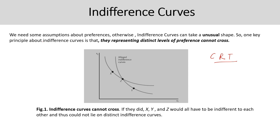To prove this, observe in the figure that there are three bundles a consumer can choose from: X, Y, and Z. X lies only on indifference curve I1, Y lies on indifference curve I2, and Z lies at the point of intersection — so it lies on both I1 and I2. By assumption, indifference curves represent distinct levels of preferences. Say X is strictly preferred over Y.